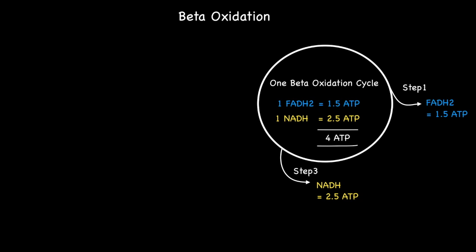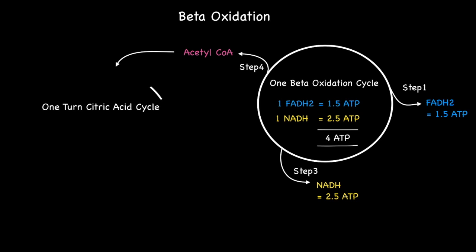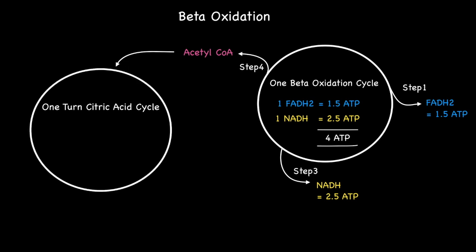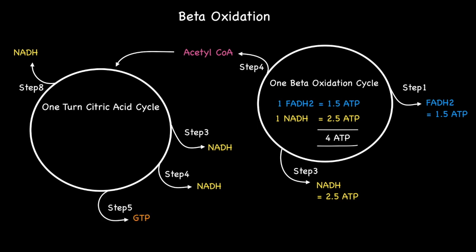In addition, each beta-oxidation cycle also produces acetyl coenzyme A during step number four. Each acetyl-CoA acts as an entry point into the citric acid cycle. In short, each single acetyl-CoA produced during beta-oxidation causes the citric acid cycle to spin once. Each spin or turn produces a number of high energy commodities. At steps three, four, and step number eight, NADH is produced, while during step five a single GTP and step six produces a single FADH2.